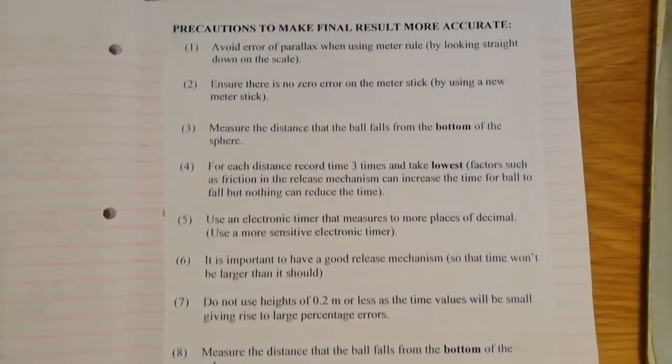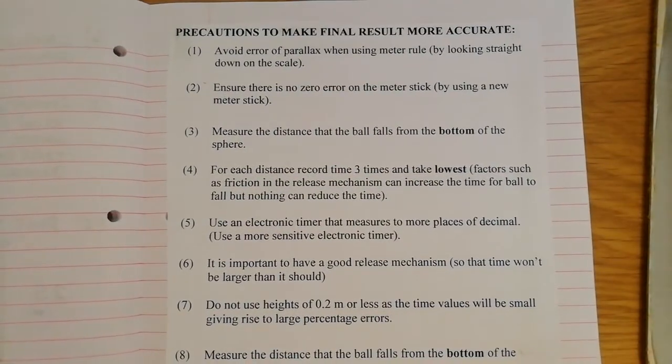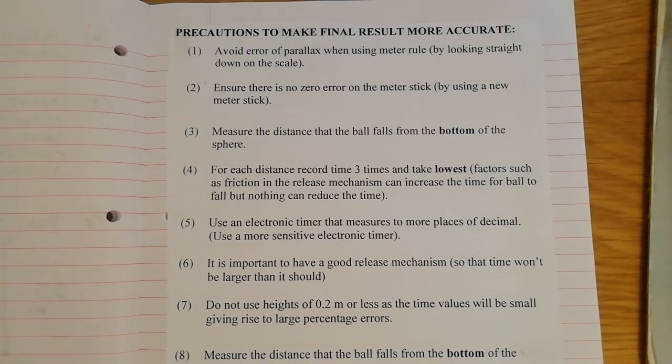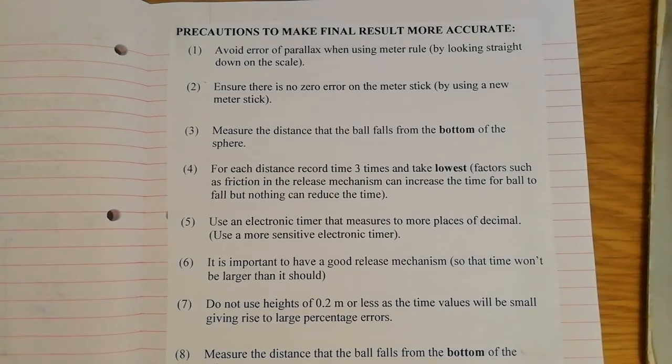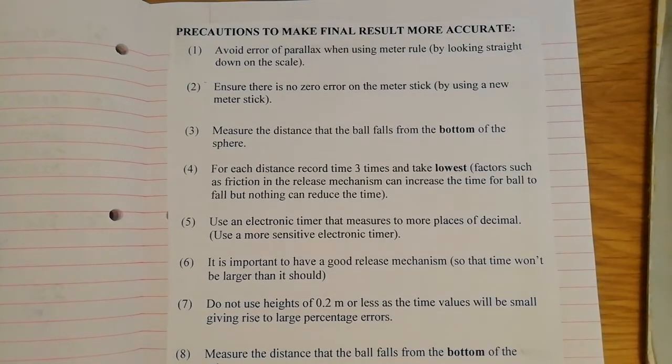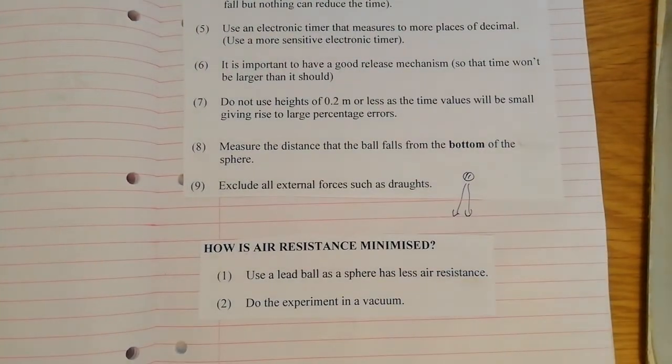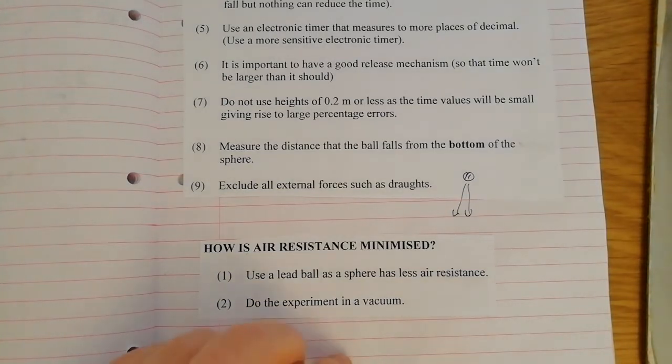Okay, what else did we do? Well, we looked at, as we do with all experiments, some precautions to make the final result more accurate. And there's a whole set of precautions here to make the final result more accurate. Some of them actually are repeated there, but that's okay. That's not a problem. We also looked at a couple of ways of minimizing air resistance in this experiment. And make sure you note them because they have come up in exams over the years.